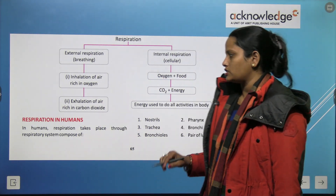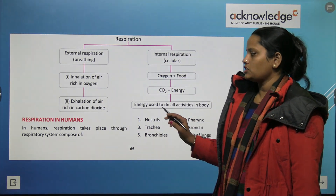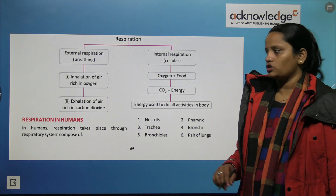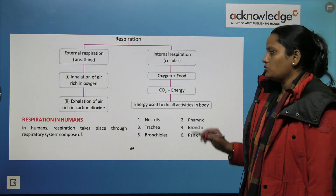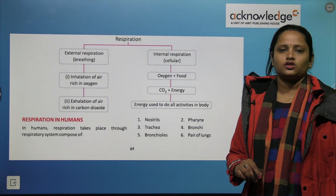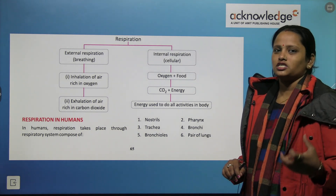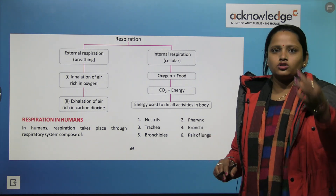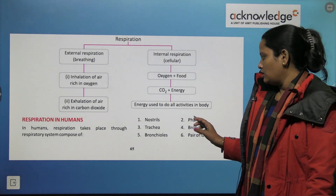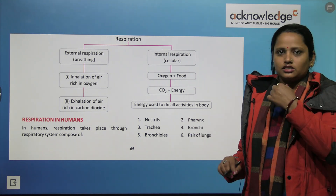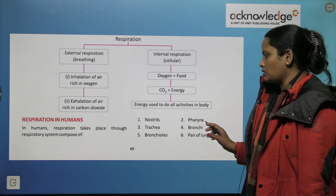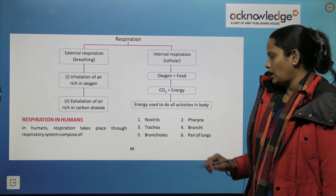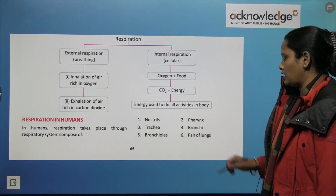What is respiration in humans? In humans, respiration takes place through the respiratory system. The respiratory organs include: nostrils and nose, pharynx, trachea, bronchi, bronchioles, and a pair of lungs. These six structures work together to facilitate respiration.